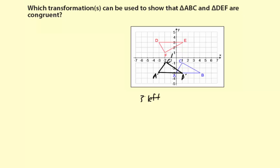So my coordinate notation for a translation of 3 left is (x, y) maps to (x minus 3, y). There was no vertical change here.